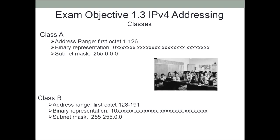Let's talk about classes of addresses. A Class A address: the first octet — the first digit to the left — can be any number from 0 through 126. In its binary representation, the first digit on the left is always a 0. And a Class A IP address has a subnet mask that is always 255.0.0.0.